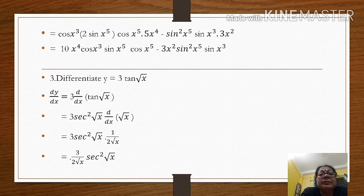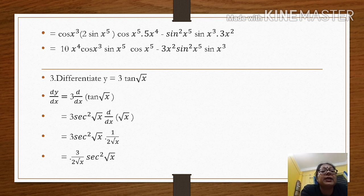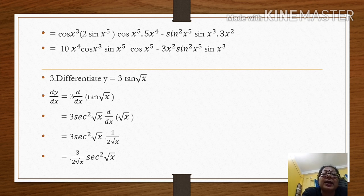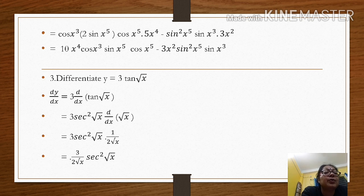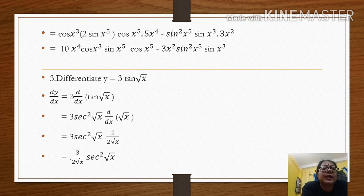The third problem: y is equal to 3 tan(root x). The constant 3 comes outside. The derivative of tan is sec squared, so we get 3 sec squared(root x), multiplied by the derivative of root x, which is 1 by 2 root x. These are all sums based on the chain rule.